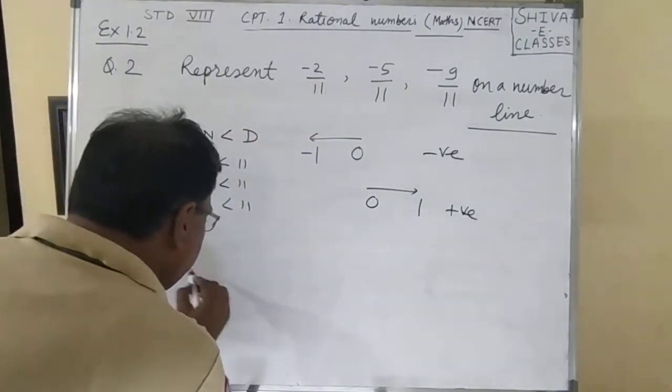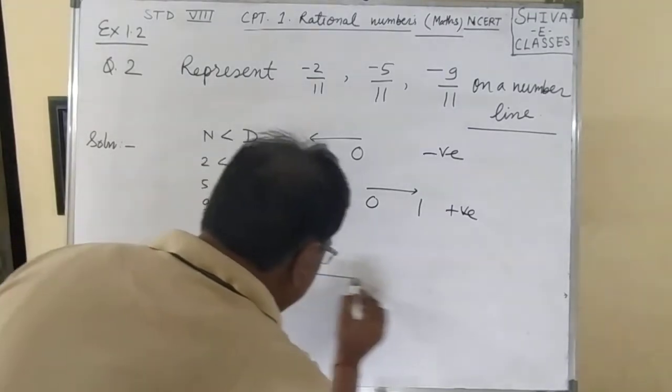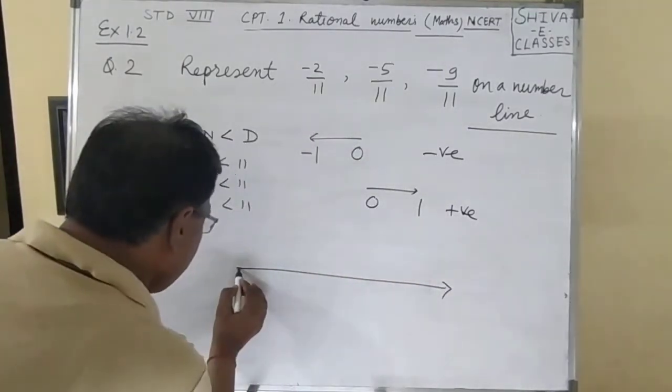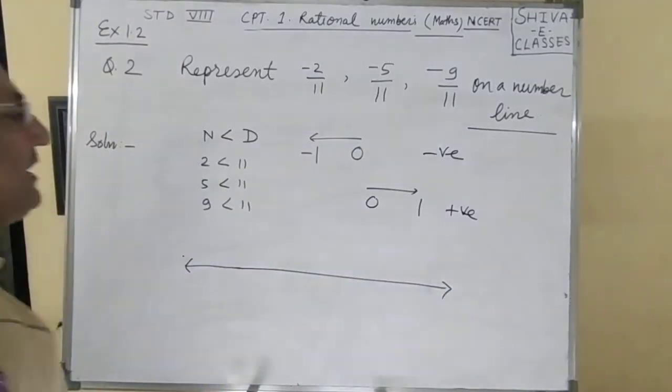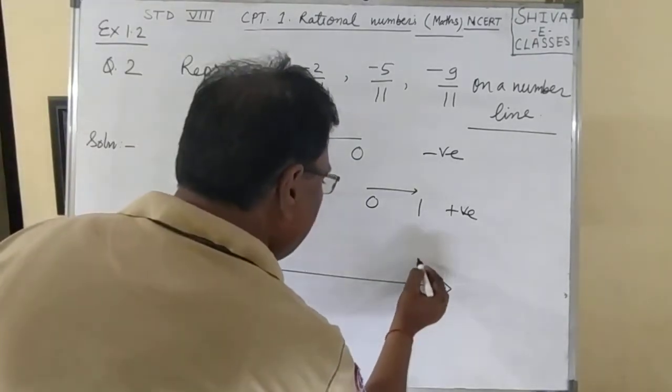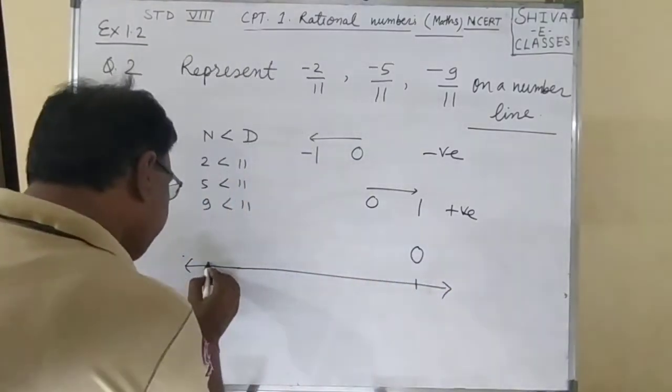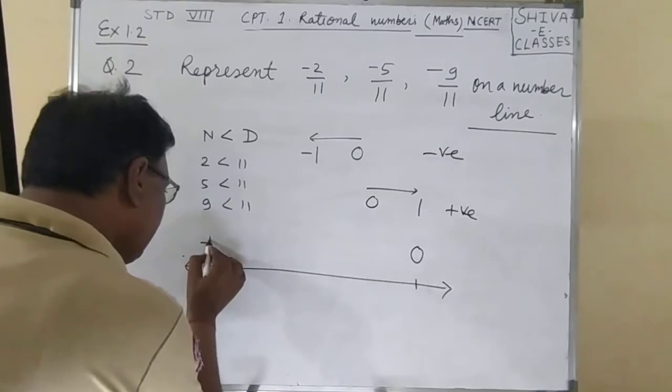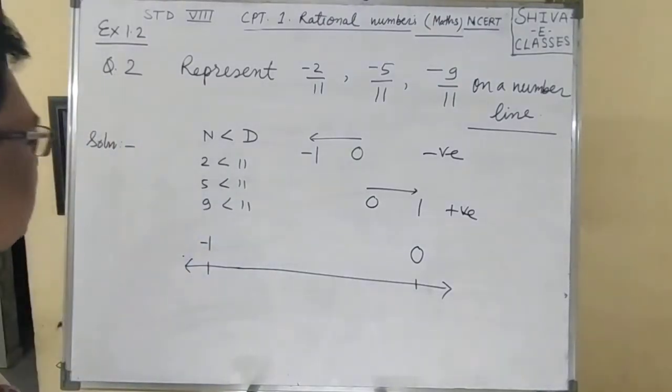So we draw a number line, and this number line goes from 0 to -1. We need to divide this region into 11 equal parts.